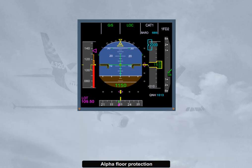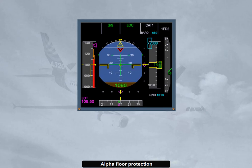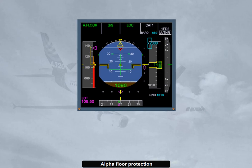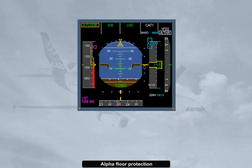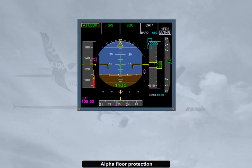If the airspeed continues to drop below the low energy warning and the angle of attack increases above a given threshold, the alpha-floor function of the autothrust is triggered — this also inhibits the low energy warning. The autothrust commands full thrust, that is, TOGA thrust. The angle of attack threshold which triggers the alpha-floor protection is processed by the FAC as a function of aircraft parameters such as configuration and deceleration rate. When alpha-floor is triggered, autothrust is turned on if it was previously off, indicated by a white ATHR on the FMA.